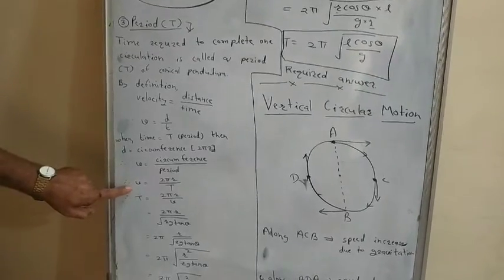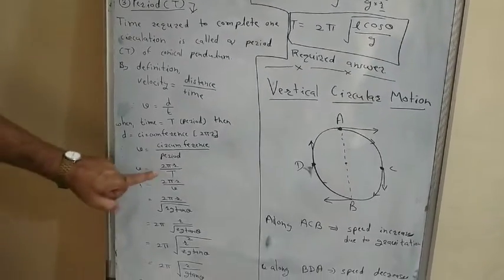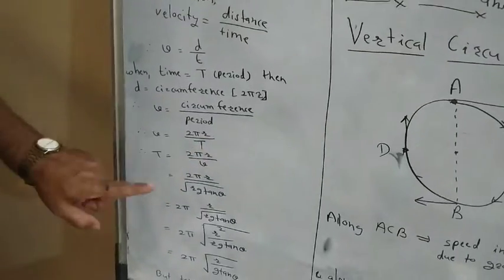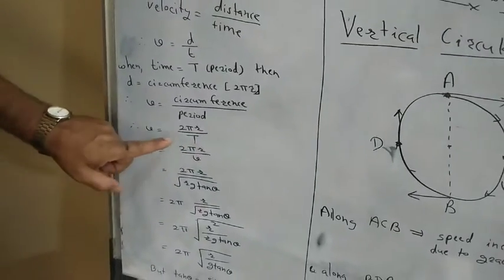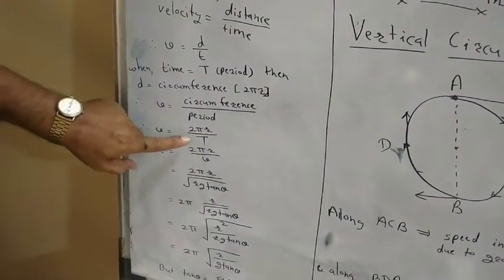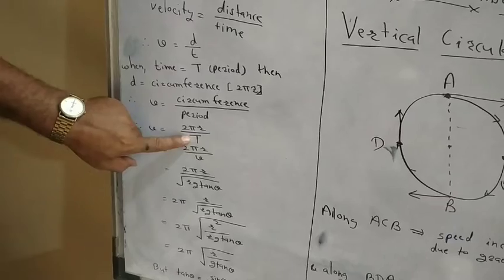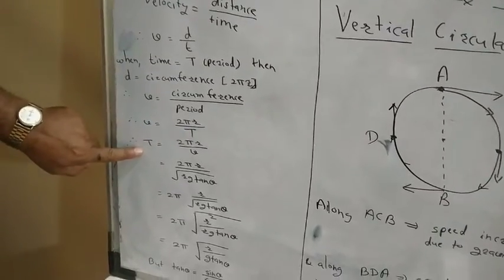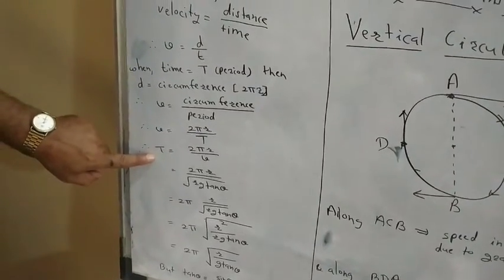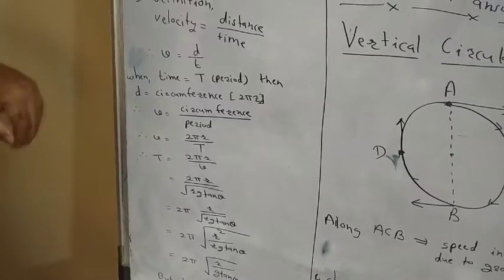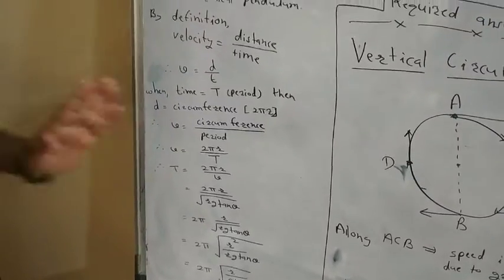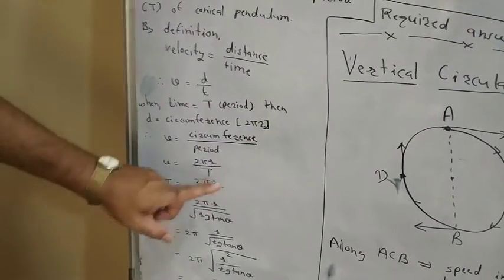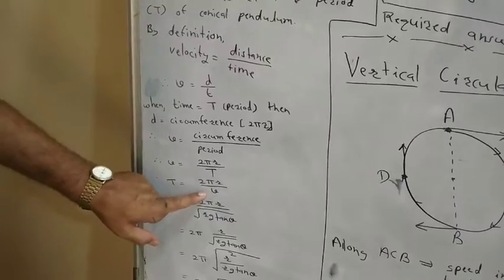Putting this into the equation, we get v = 2πr / T. We want to find the expression for capital T, so we transfer T to one side and get T = 2πr / v.